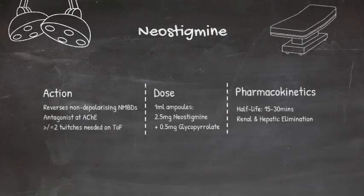In summary, neostigmine must always be administered with glycopyrrolate, and can be used to reverse partial non-depolarising muscular blockade — so at least two twitches must be present.